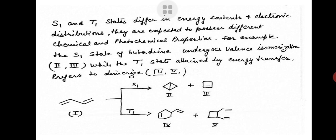The S1 and T1 states differ in energy contents and electronic distributions, so they possess different chemical and photochemical properties. For example, the S1 state of butadiene undergoes valence isomerization, while the T1 state attained by energy transfer prefers to dimerize. The products are shown in the figure.